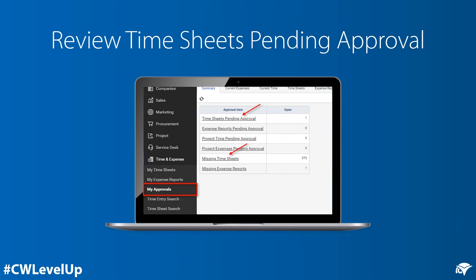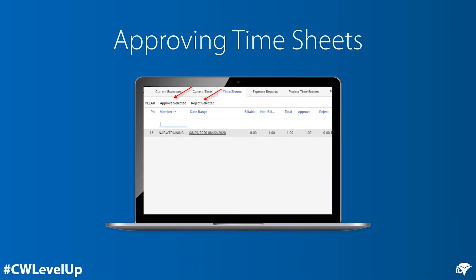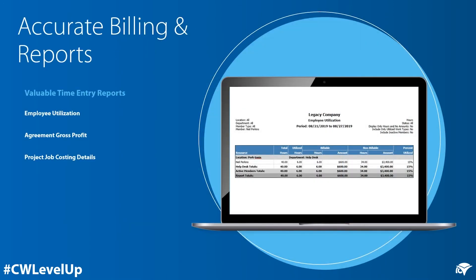Once employees finish completing the review, they can submit their timesheet. The time approver can navigate to My Approvals and review the timesheets pending approval and missing timesheets that are past due. Once the time approver clicks on the timesheets in the pending approval status, they can select the timesheet to review, approve, or reject.